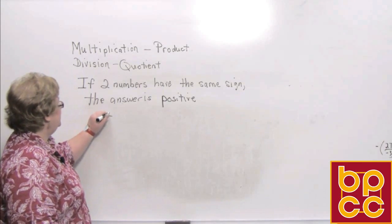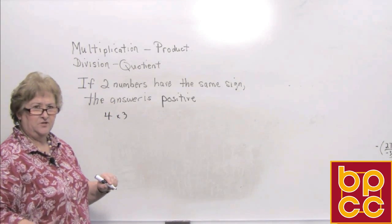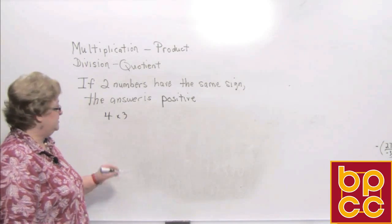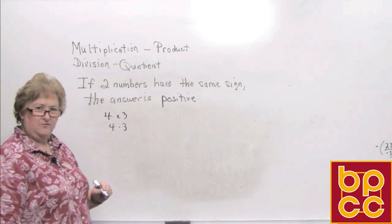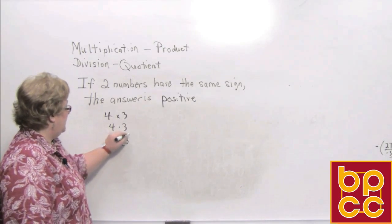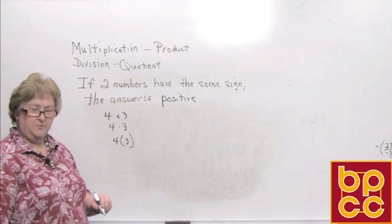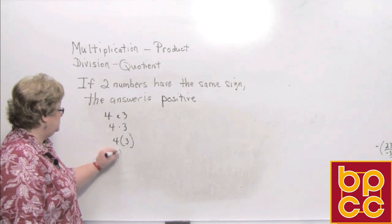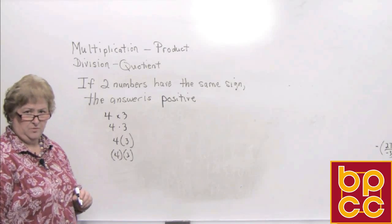You may see a times sign, though not too often, because we'll be dealing with variables and you're not usually going to see that times sign. More often you'll see a dot — for example, 4 dot 3. Or you may see 4 hugging a 3 in parentheses. When a number is hugging another number in parentheses, it means to multiply. Or you may see two numbers hugging each other in parentheses, and that also means to multiply.